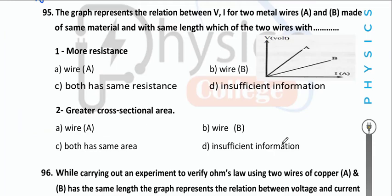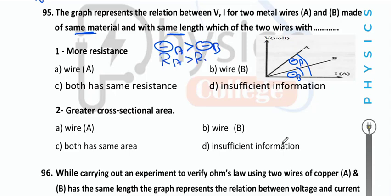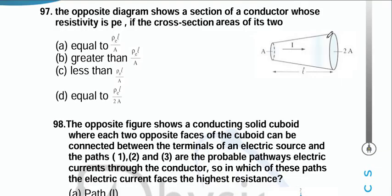A graph of V vs. I for two wires of same material and same length. The slope represents resistance. θ_A > θ_B, so R_A > R_B, meaning diameter A < diameter B — wire B is thicker.